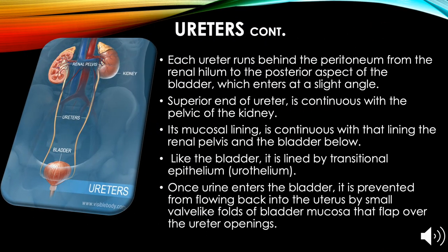Each ureter runs behind the peritoneum from the renal hilum to the posterior aspect of the bladder, entering at a slight angle. The superior end of the ureter is continuous with the renal pelvis, and its mucosal lining is continuous with that of the renal pelvis and bladder below. Like the bladder, it is lined with transitional epithelium (urothelium). Once urine enters the bladder, it is prevented from flowing back into the ureter by small wave-like folds of bladder mucosa that flap over the ureter openings.